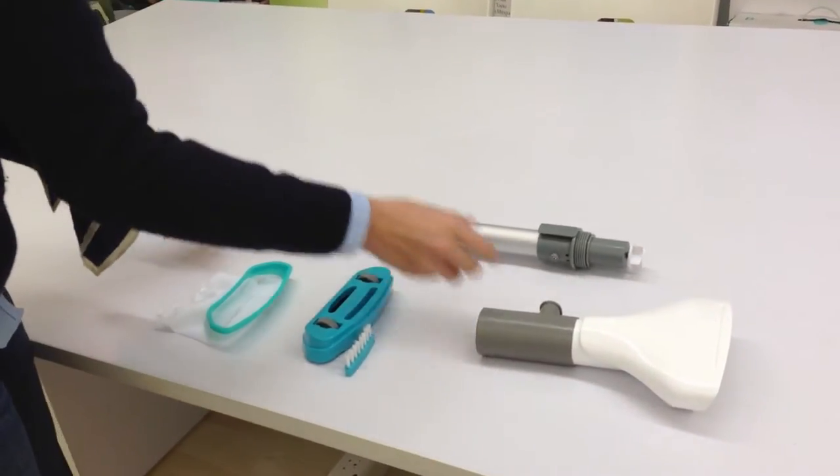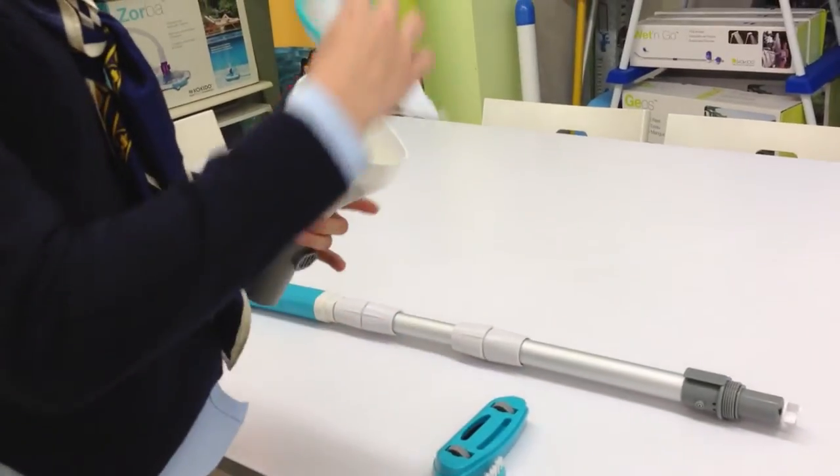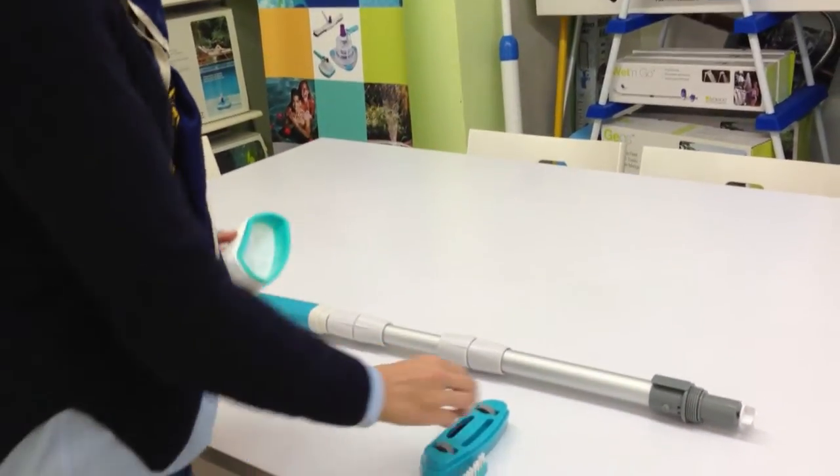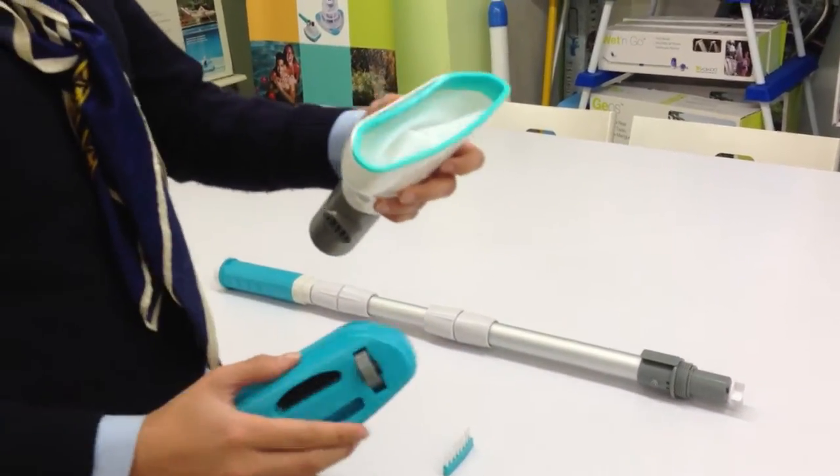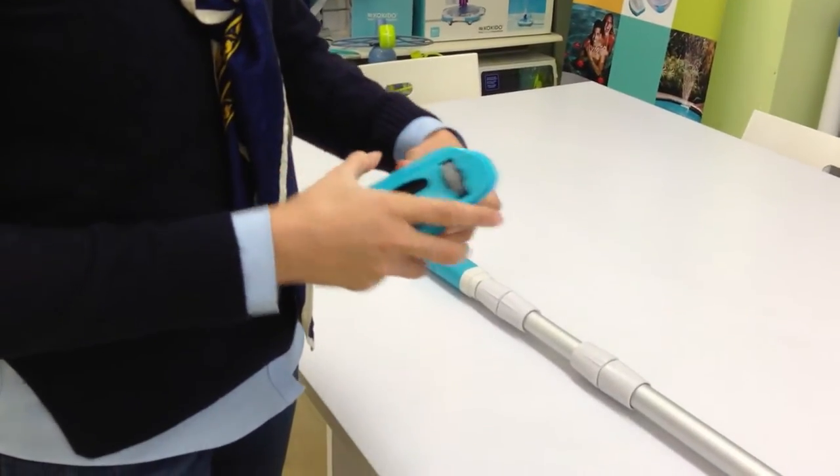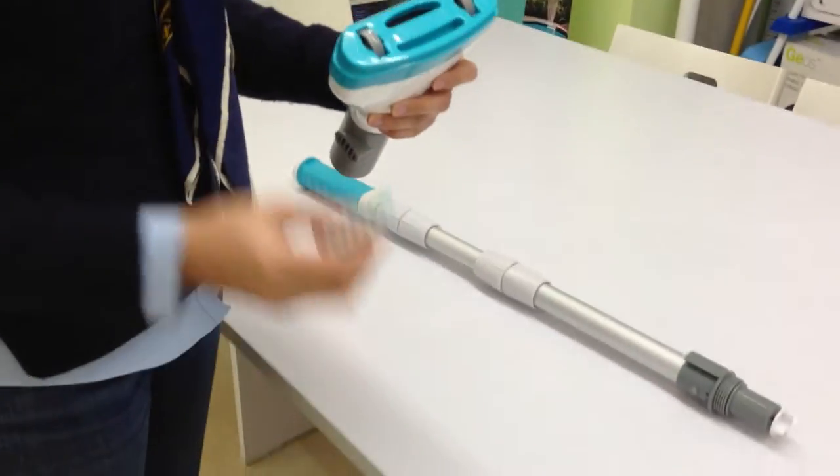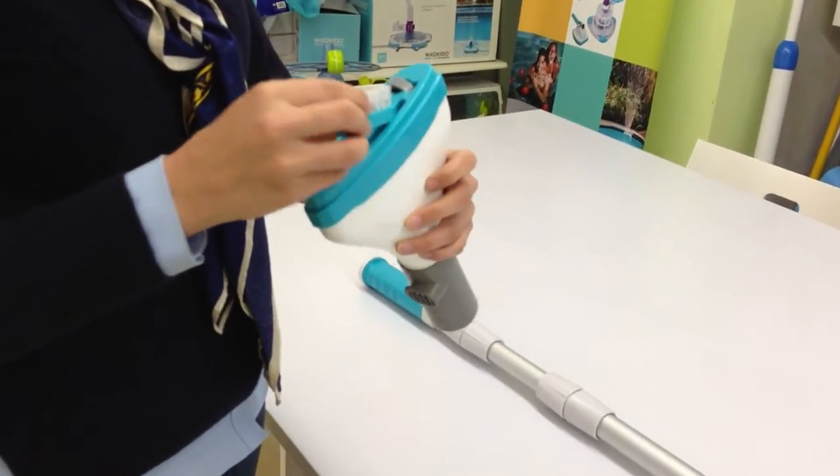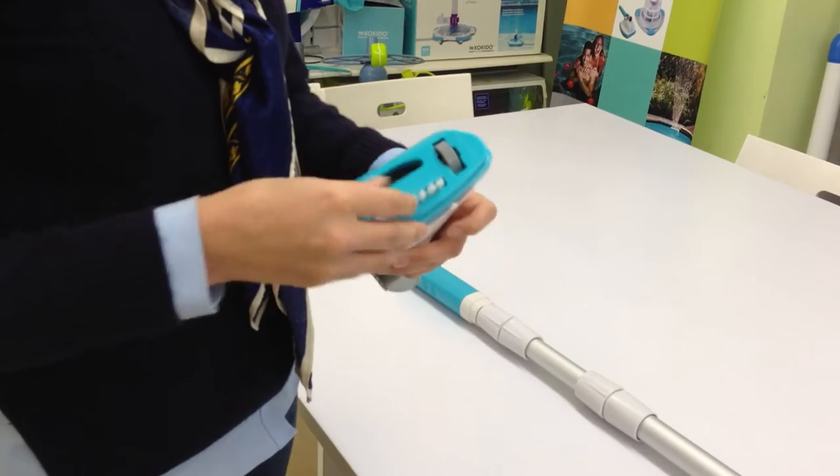So how do you assemble it? First of all, the net bag goes in here, the top head clips on, and if you want to use the brush, you can just clip it on. It's pretty simple. There you go.